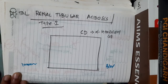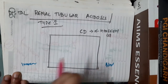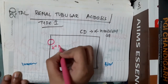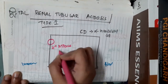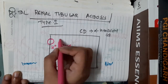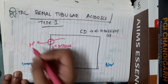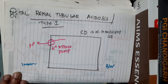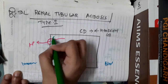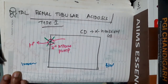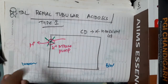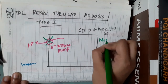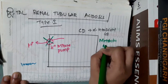On the apical surface of alpha intercalated cells of the cortical collecting duct, we have an H+ ATPase pump. This H+ ATPase pump helps in secretion of H+ ions. Whenever there is a mutation in the H+ ATPase pump, this will prevent the secretion of H+ ions into the lumen, resulting in metabolic acidosis.